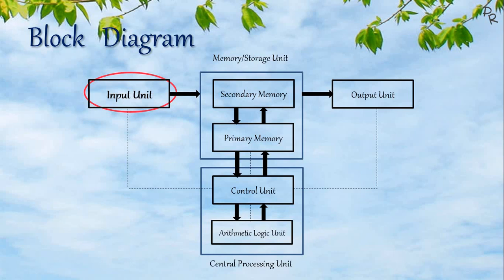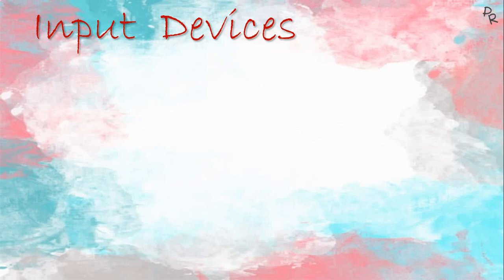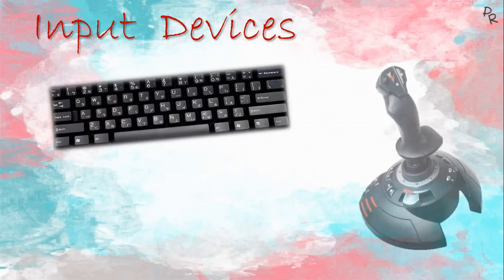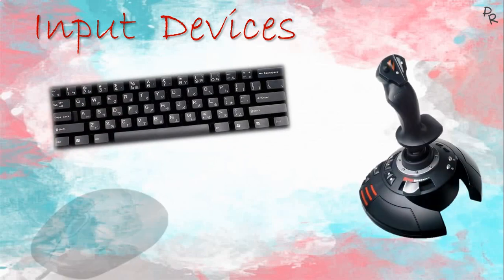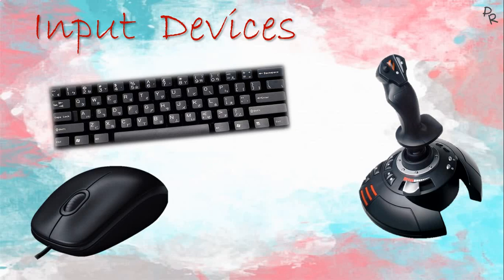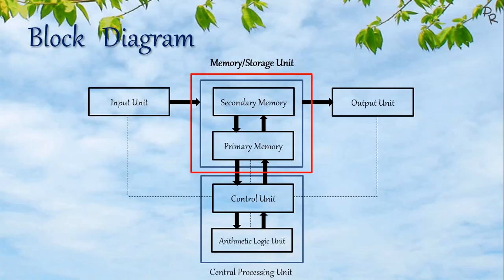So the input unit will convert this data into computer-understandable form. Here are a few input devices: the keyboard, joystick, mouse, and the scanner. After the data is given as input to the computer, it is stored in the memory or storage unit.